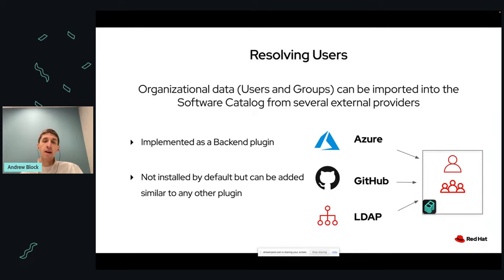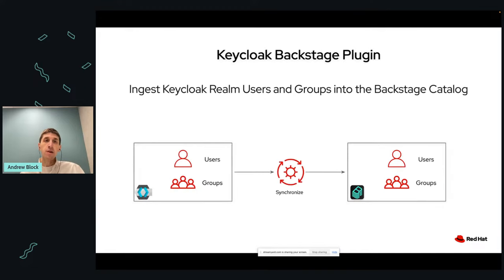One key differentiator between an OAuth 2 proxy provider and providers like GitHub or GitLab is that you have to set up your own sign-in resolver to map an existing user within the software catalog, or you can bypass that completely and create a user on the fly. Resolving users usually involves mapping to an existing entity in the catalog. In most cases, you synchronize them from an external source — Azure, GitHub, LDAP — through a backend provider to synchronize users and groups. You can also ingest users and groups from KeyCloak into the Backstage catalog.